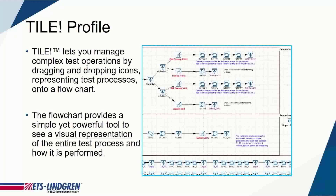The flowchart provides a simple and powerful tool to see a visual representation of what's going on. When an action is running, it actually has a blue halo around it. When it completes successfully, it illuminates in green, and if there's some kind of failure, it turns red. So there are very easy cues to see where you are in the test flow while a test is running.